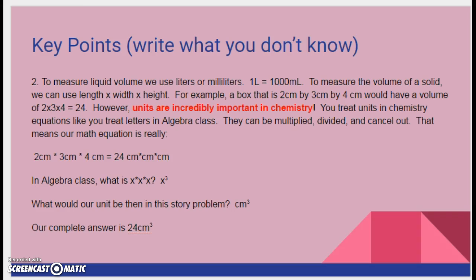To measure liquid volume, we use liters or milliliters. One liter equals 1,000 milliliters. To measure the volume of a solid, we can use length times width times height. For example, a box that is 2 centimeters by 3 centimeters by 4 centimeters would have a volume of 2 times 3 times 4 equals 24.